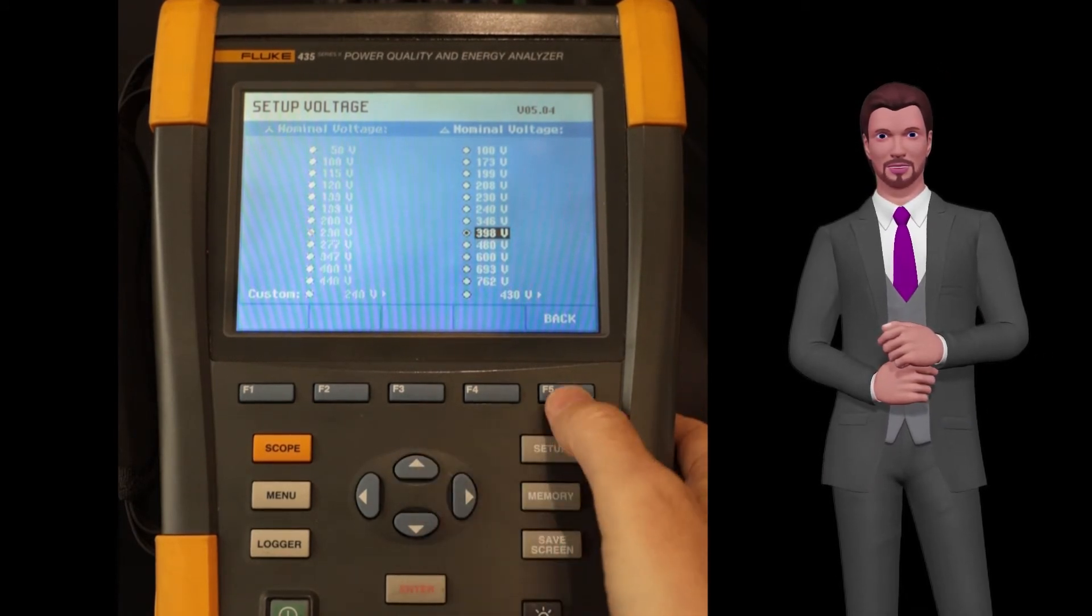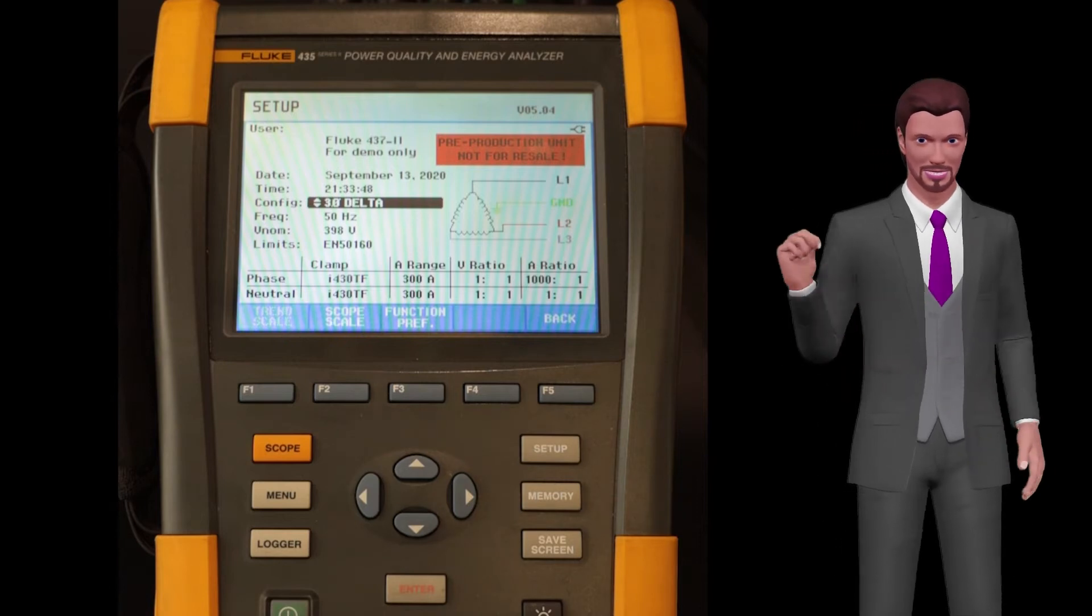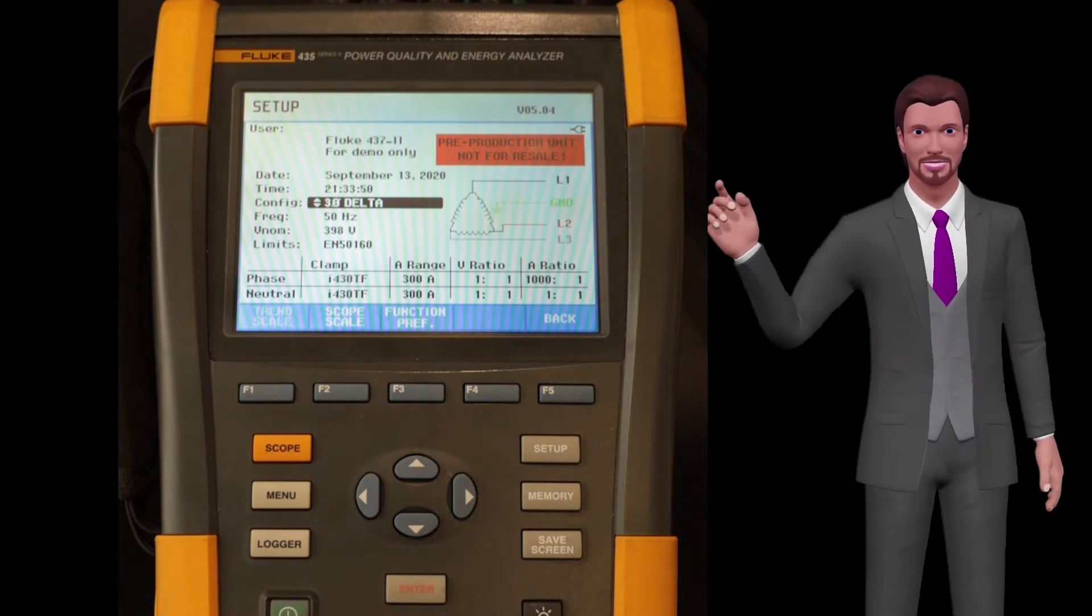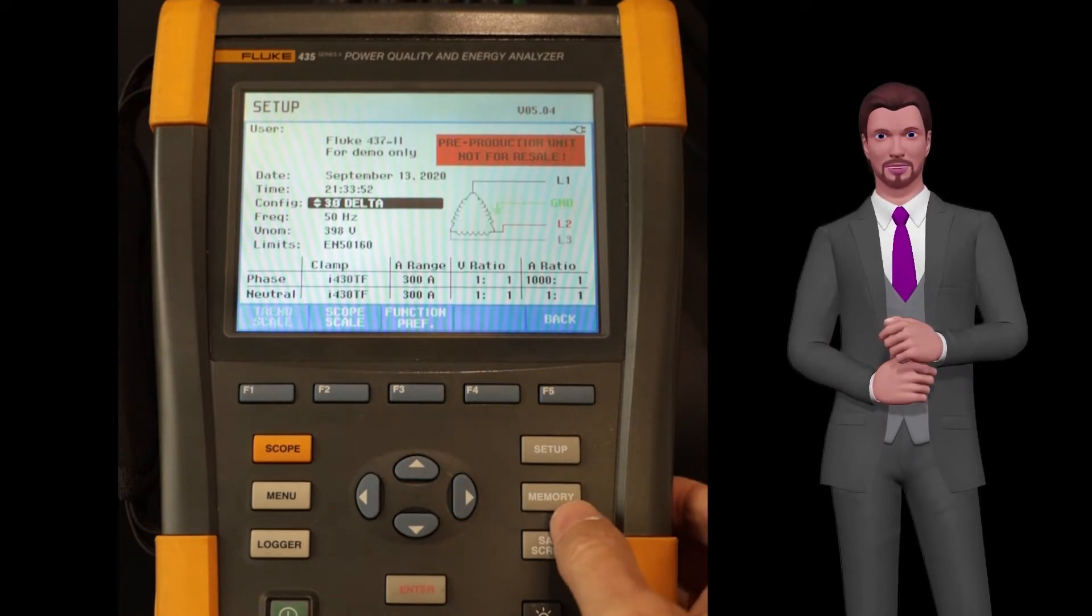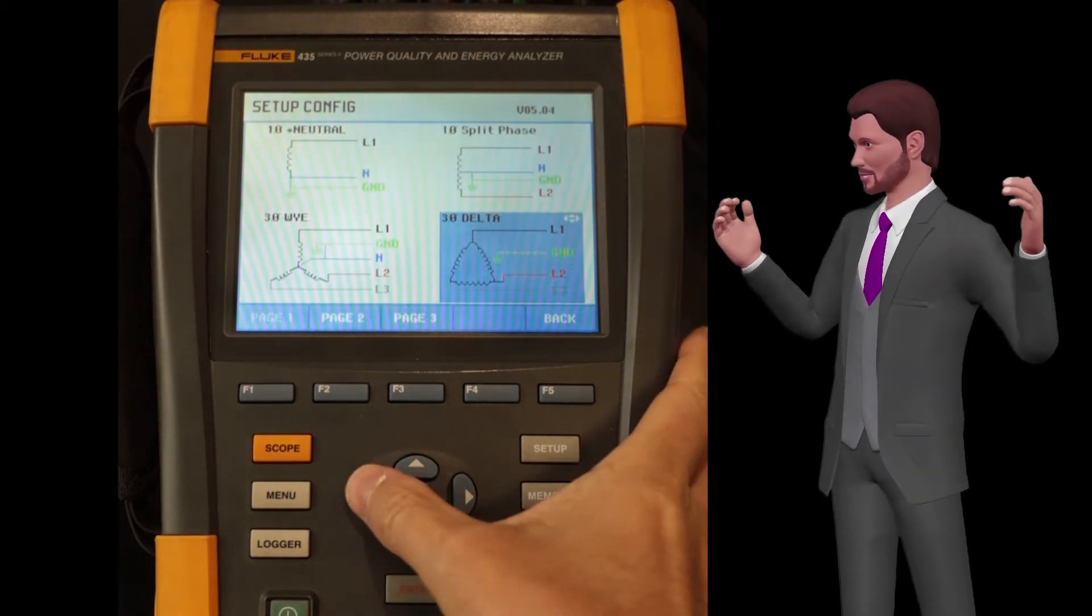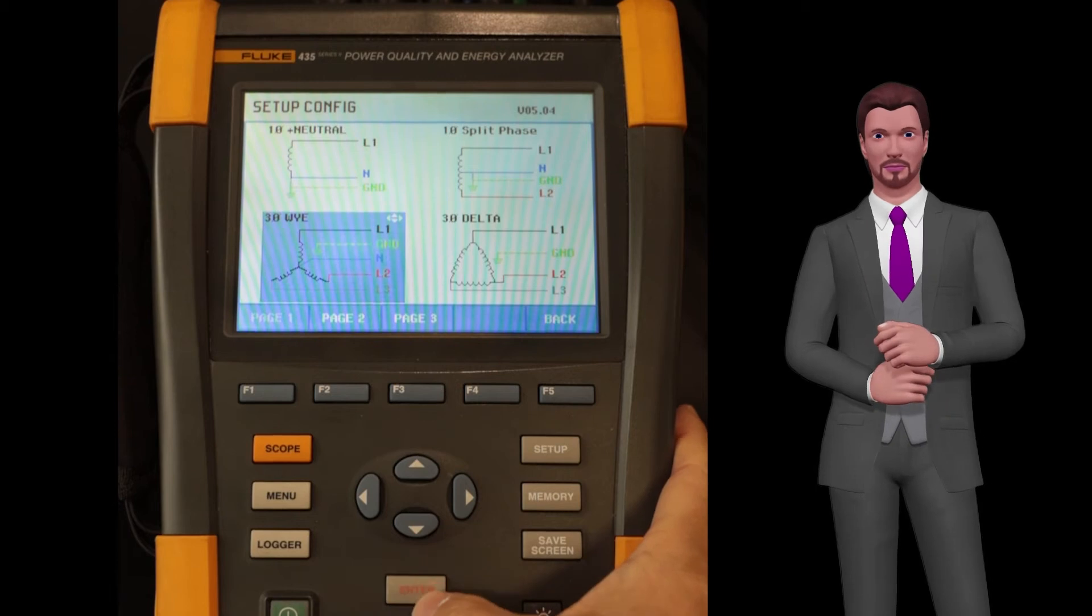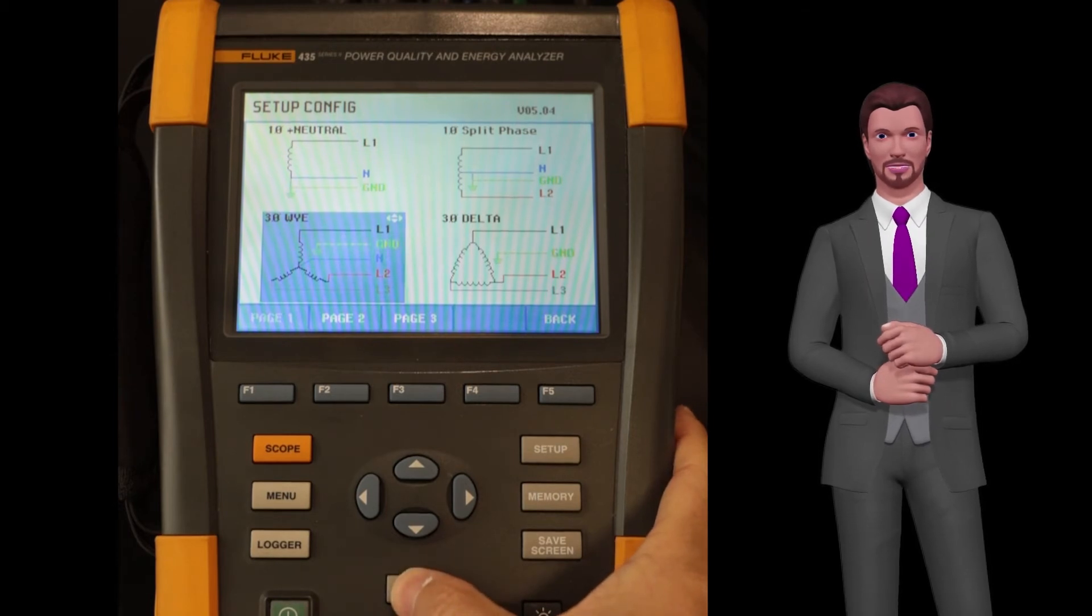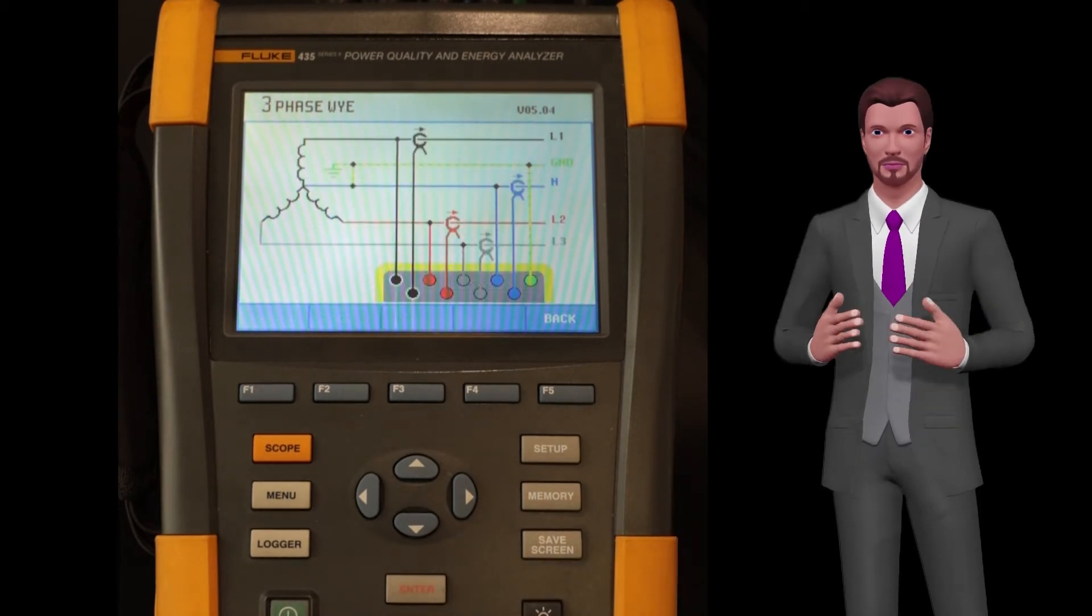But now I want to show you something very important. What nominal voltage value do we have to enter if we choose a star system? Let's try. We press the enter key again and choose with the left arrow the system 3 to 0 WYE, which is the name given to a star system with a neutral grounded, and then we press the enter key.